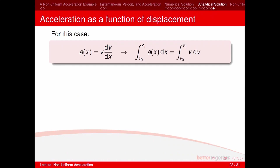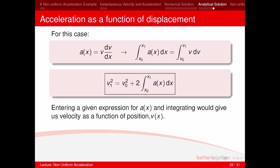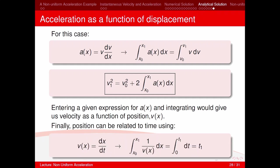When acceleration is a function of displacement, we write a(x) = v dv/dx. Rearranging gives: v_1² = v_0² + 2∫a(x) dx. Integrating a given expression for a(x) yields velocity as a function of position, and this can be related back to time using v(x) = dx/dt.